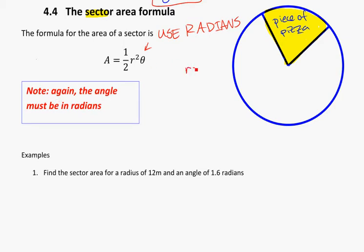So this one again, r is equal to the radius, which is just half the distance across the circle, and theta is the angle, and again, in radians.